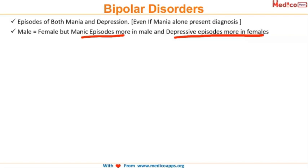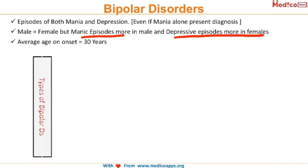Depression is more common in females — we've seen that. So depressive episodes are more common in females and manic episodes are more common in males. The average age of onset is relatively early, at around 30 years of age.